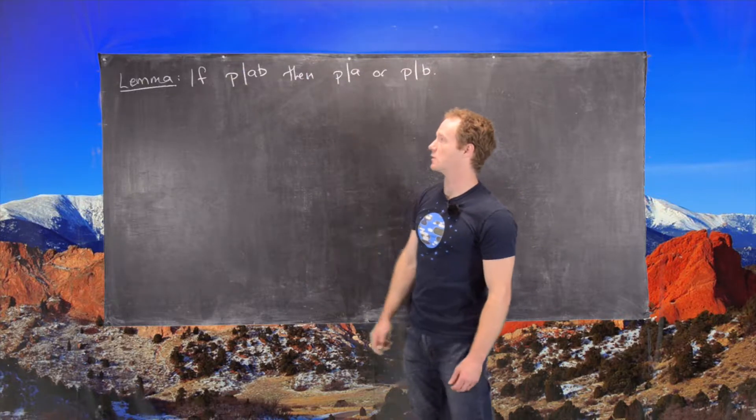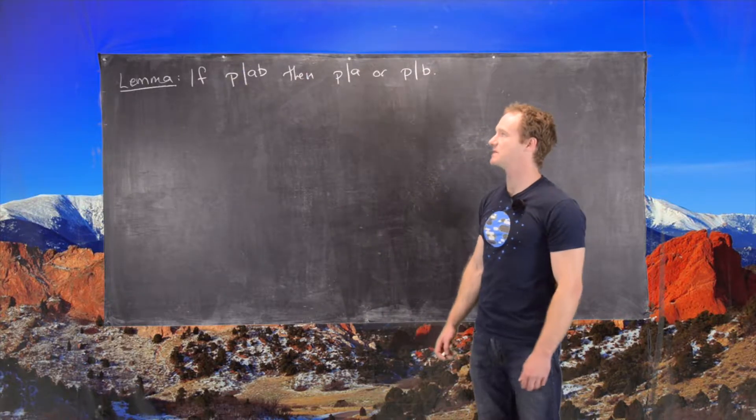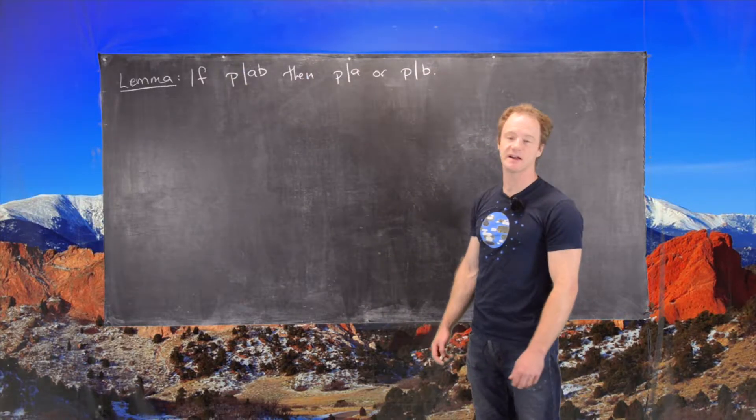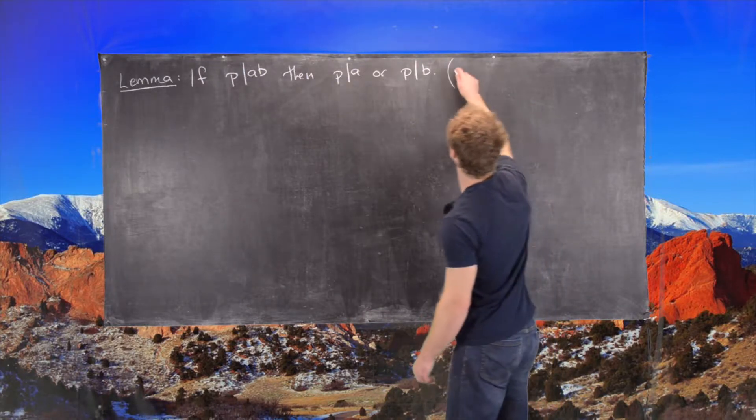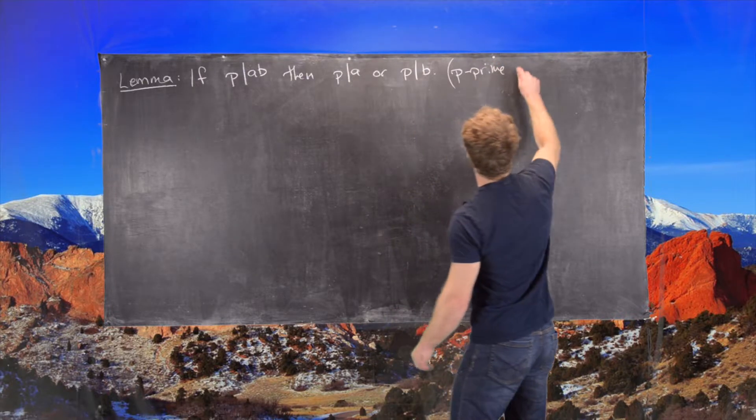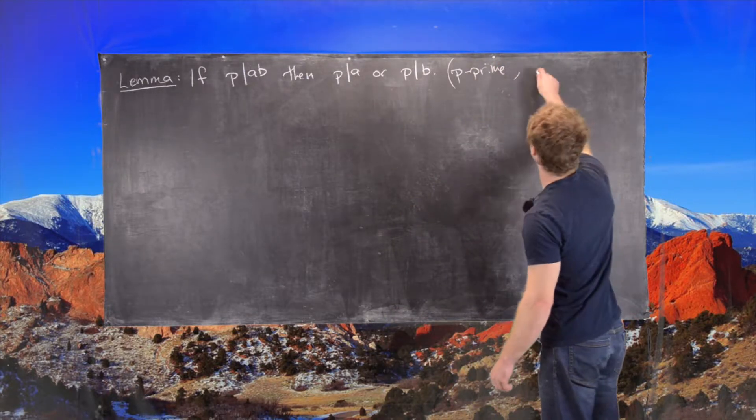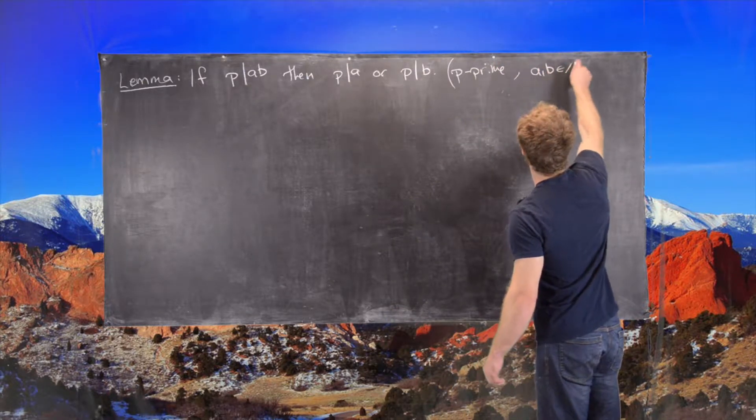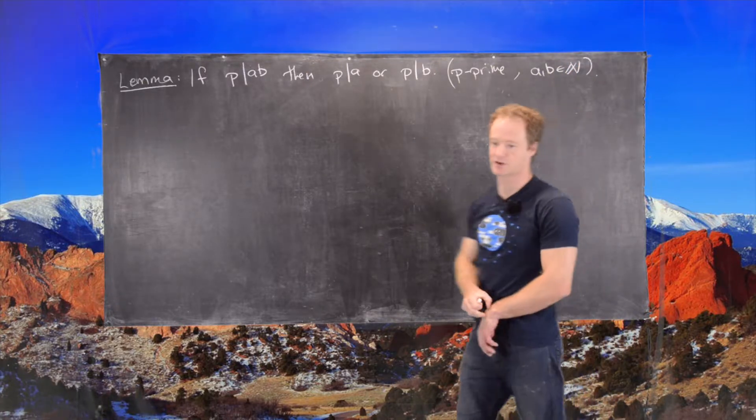We're going to prove that if P divides the product AB, then P divides A or P divides B. And I should say here that P is prime and that A and B are any natural numbers.